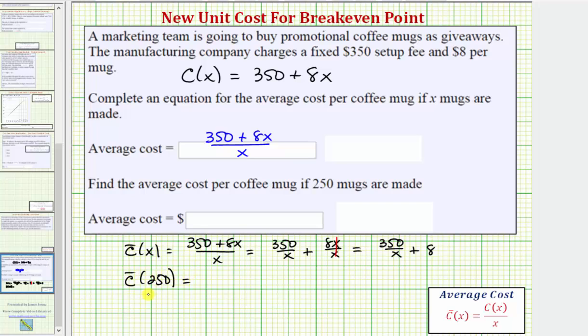And let's evaluate the average cost function in this form here. So we'd have 350 plus 8 times 250 which would be the total cost and then we divide by the number of mugs which is 250. So 8 times 250 is 2,000. 350 plus 2,000 would be 2,350 and we divide by 250.